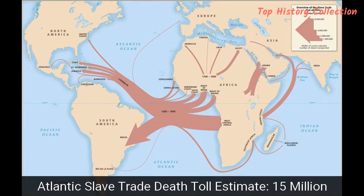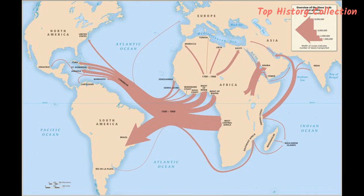Number 10: Atlantic Slave Trade – Death Toll Estimate: 15 Million. The Atlantic, or transatlantic, slave trade began roughly in the 16th century, reaching its peak in the 17th century until finally being all but abolished in the 19th century. The main driving force behind this trade was the need for European empires to establish themselves in the New World.